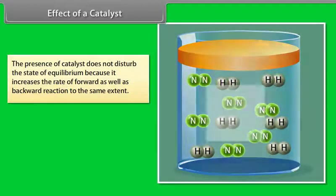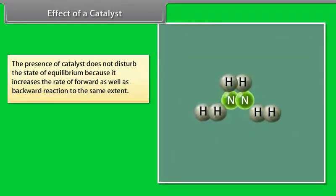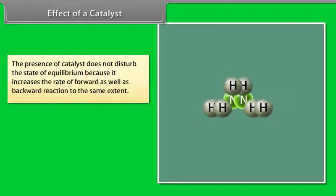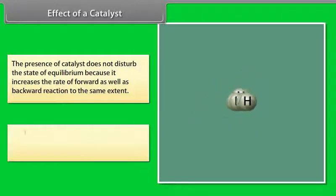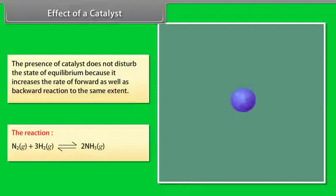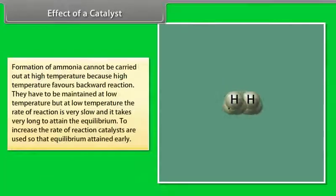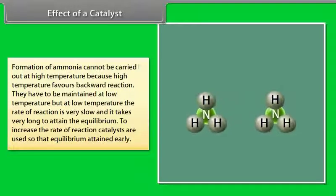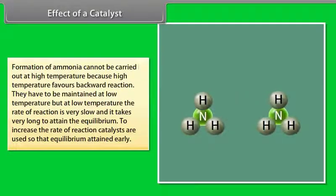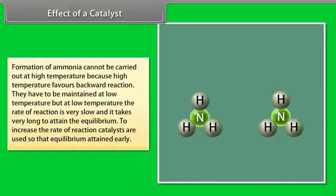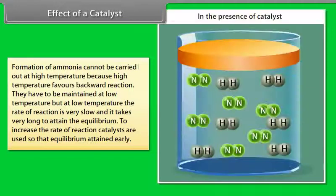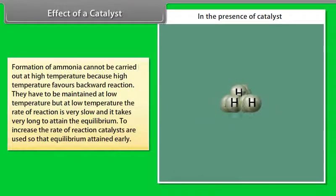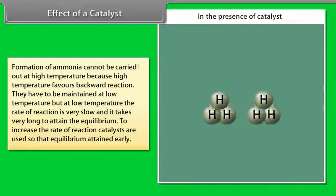Effect of a Catalyst. The presence of a catalyst does not disturb the state of equilibrium because it increases the rate of both the forward and backward reactions to the same extent. For the formation of ammonia, high temperature would favor the backward reaction, so low temperature is maintained. However, at low temperature the rate of reaction is very slow and it takes very long to attain equilibrium. Therefore, catalysts are used to increase the rate of reaction so that equilibrium is attained sooner.